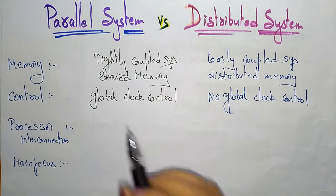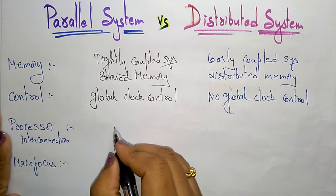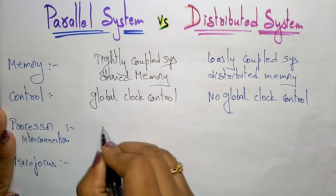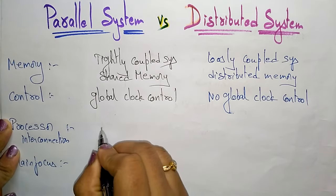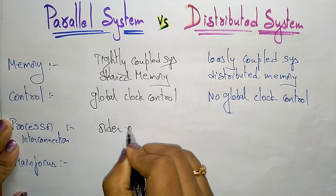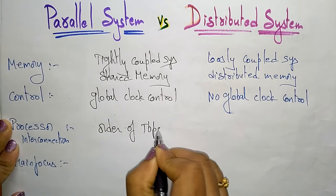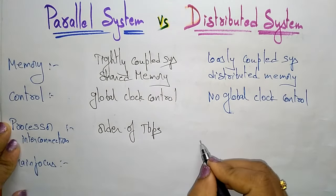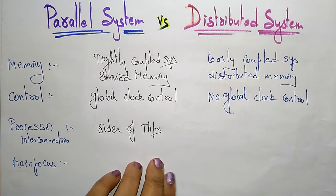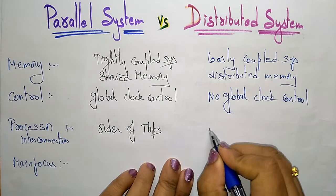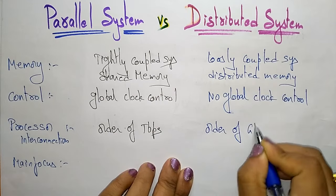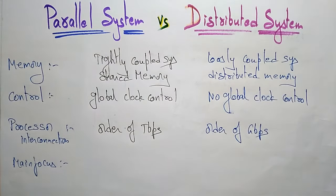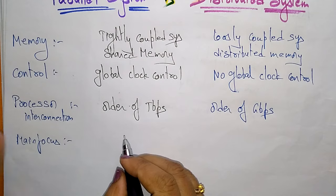Next, coming to the processor interconnection. In a parallel system, the processor interconnection is in the order of terabits per second. Whereas in a distributed system, the order is gigabits per second.